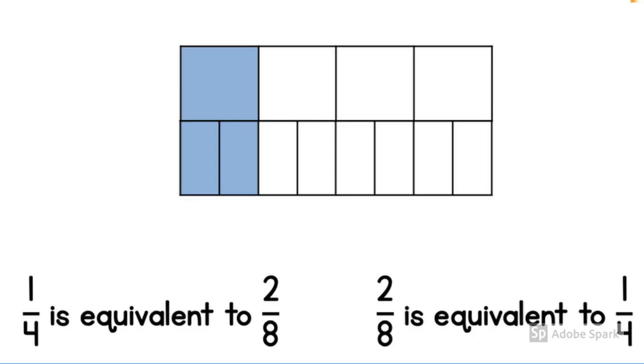So what do you notice when we put these two bar models next to each other? We can now compare. And we can see that one-quarter is the same as two-eighths. One-quarter is equivalent to two-eighths. We can also say that two-eighths is equivalent to one-quarter.